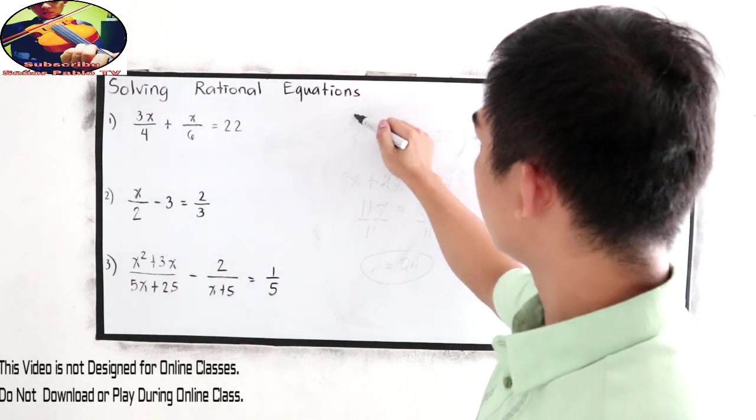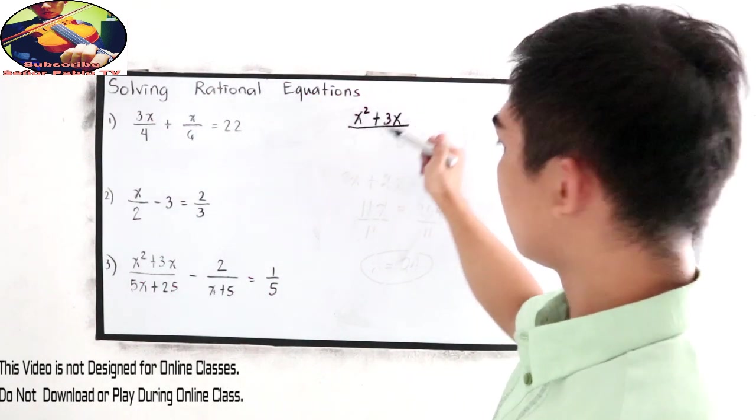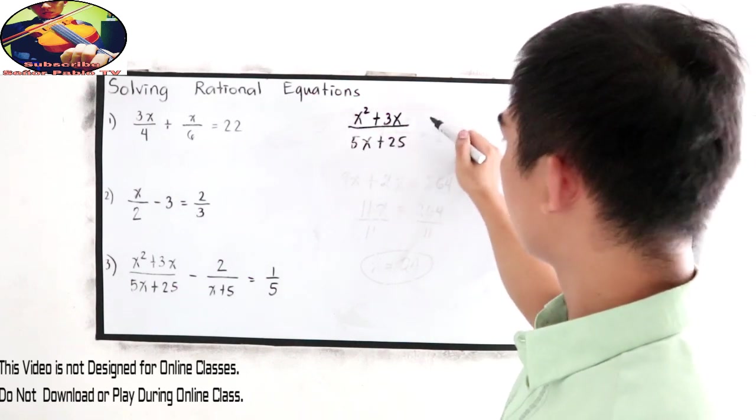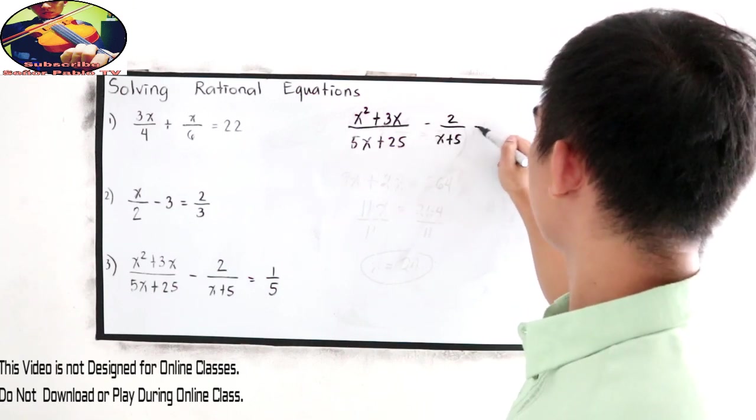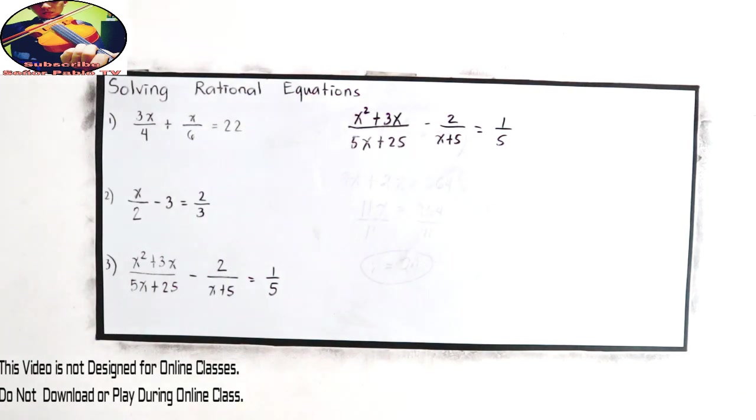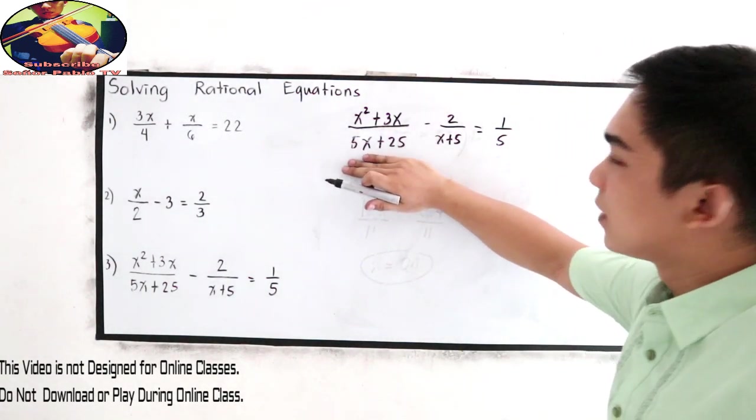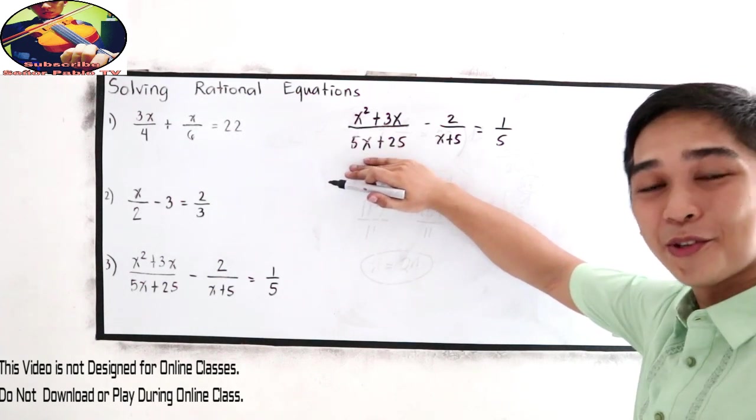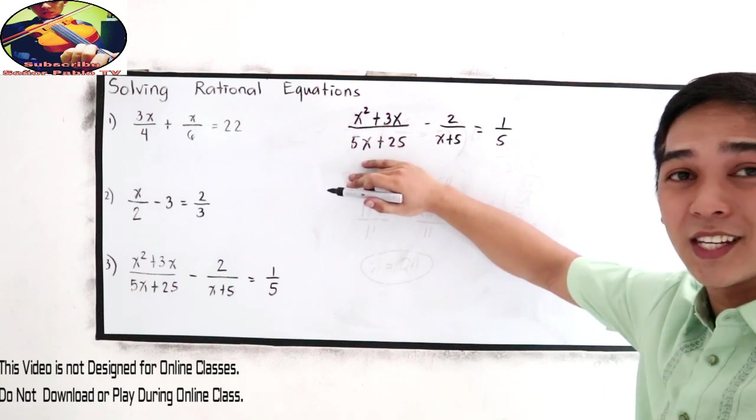Let us copy the given: x squared plus 3x all over 5x plus 25 minus 2 over x plus 5 is equal to 1 fifth. What method are you going to use?